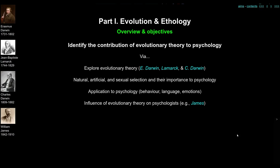So this first part is on evolution and ethology. The objectives here are to give you an overview of evolutionary theory and how it might contribute to psychology.